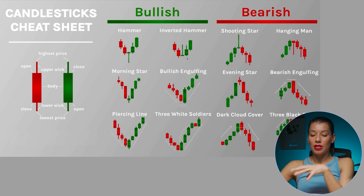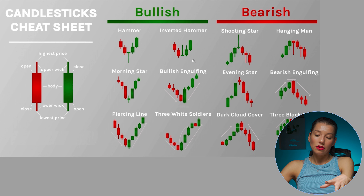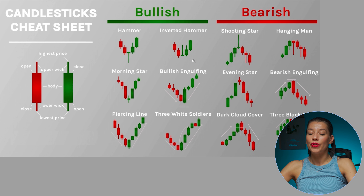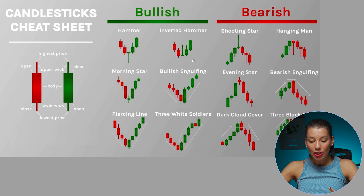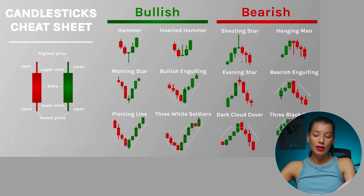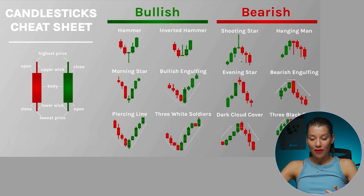It is a reversal pattern. The candle looks the same in both cases, but as you can see, it is a reversal. In the left picture, the price was moving downward before the pattern, and then the price goes upward. In the right picture, the price was going up, the pattern is formed, and then the price goes down. It is simple enough.